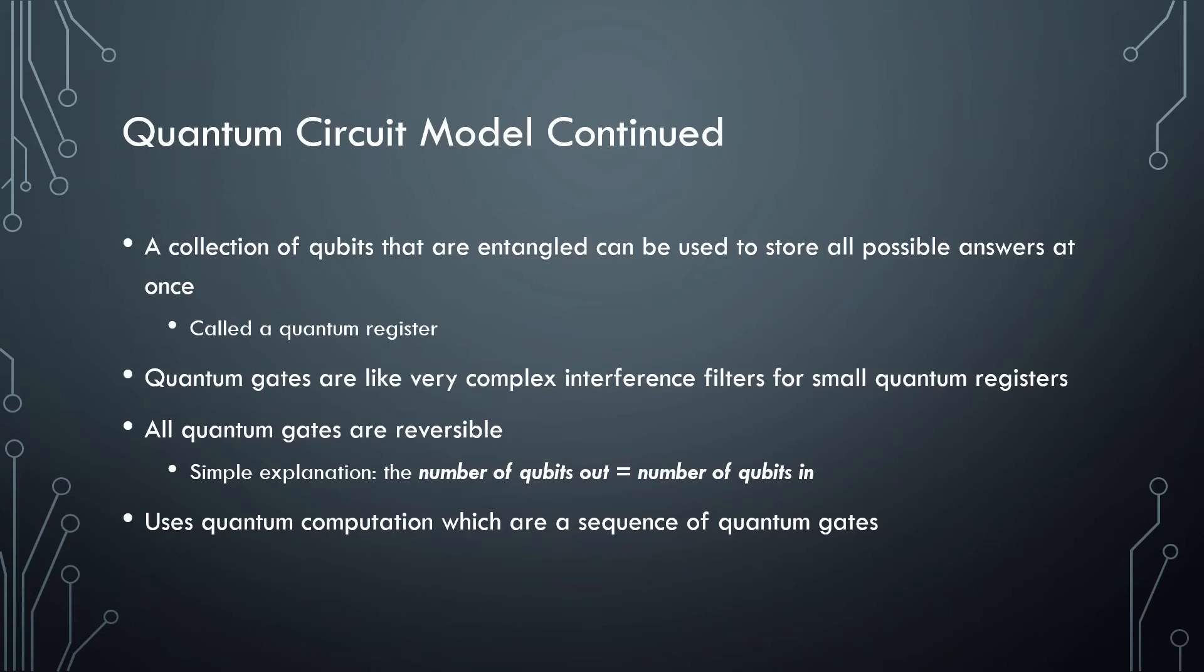Quantum gates are like very complex interference filters that work on small quantum registers. All quantum gates are reversible, including the classical logic gates: AND, OR, NOR, NOT. A simple explanation of this is that the number of qubits OUT equals the number of qubits IN, so that they can go in both directions.